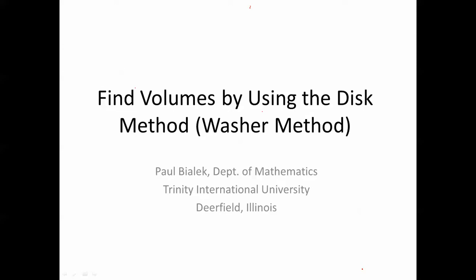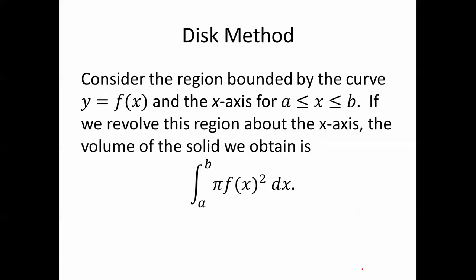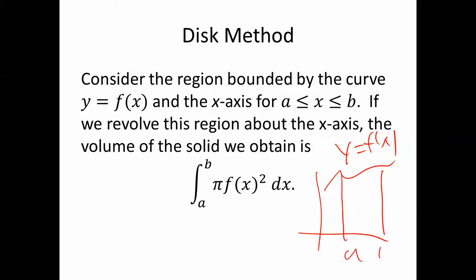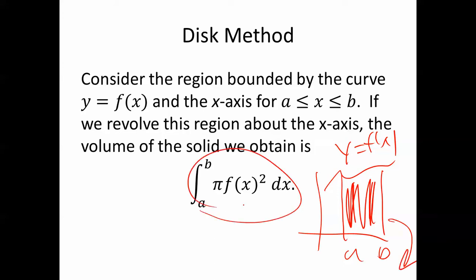Let's find volumes by using the disk method, sometimes called the washer method. Consider the region bounded by the curve y equals f of x and the x-axis for a less than or equal to x less than or equal to b. If we revolve this region about the x-axis, the volume of the solid we obtain is the integral from a to b of pi f of x squared dx.